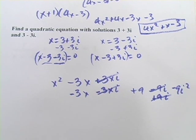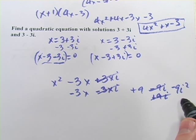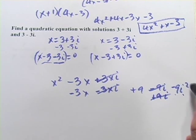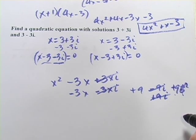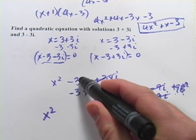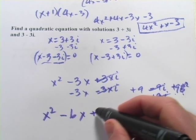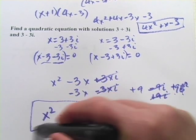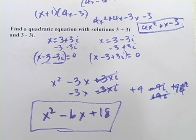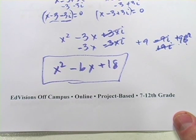Now, you might say it looks like we still have an i term, but remember, i is the square root of negative 1, so i squared is negative 1. So this is really negative 9 times negative 1, or a positive 9. So when we combine our like terms, we've got x squared, we've got negative 6x, and we've got 9 plus 9, or 18. And that is our quadratic. So that's a little bit about starting with solutions and finding the quadratic equation that gives those solutions.